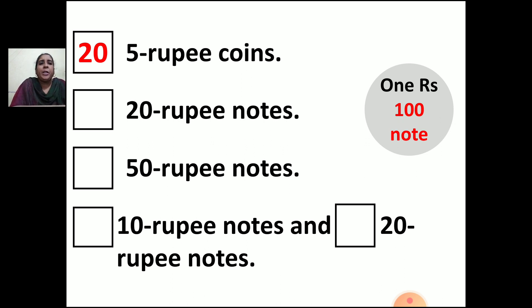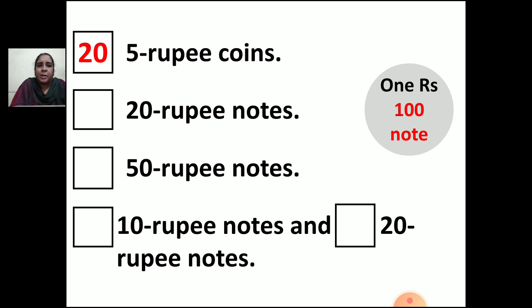Dash 20 rupee notes. If you have 20 rupee notes, how many should you have to make 100 rupees? In the table of 2, when you get 10, 5s are there, and the other zero you can take from 100. So how many 20 rupee notes should you have to make 100 rupees? It will be 5, because 5 twenties are 100.